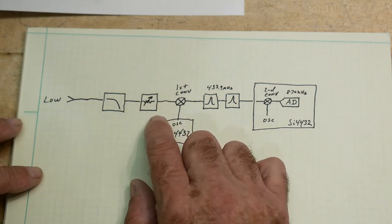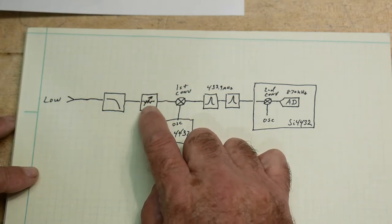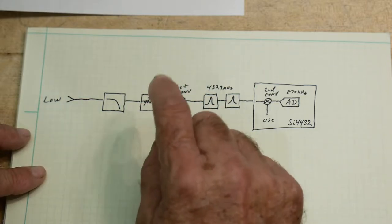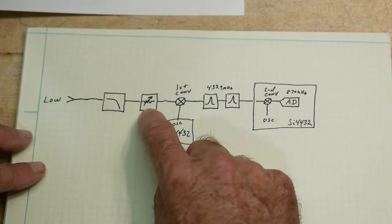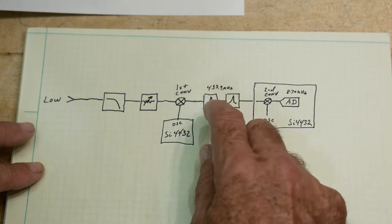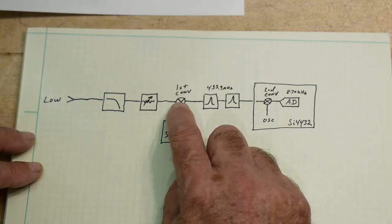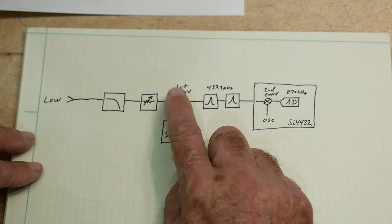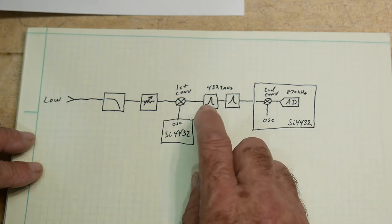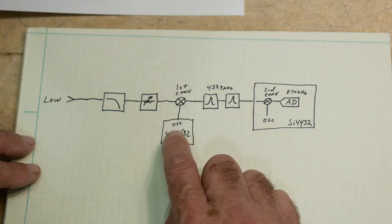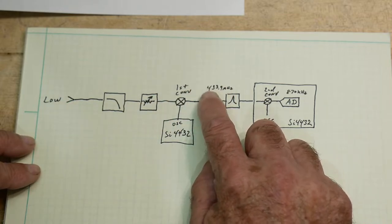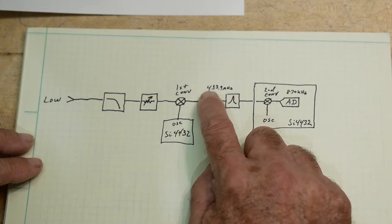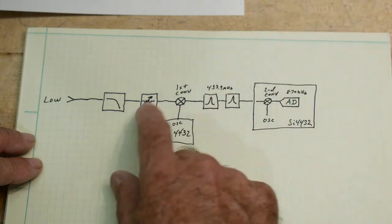So the next section is an attenuator, a step attenuator, and it's 0 to 31 dB. It's digitally implemented. And then it comes into a first converter. So this is an external mixer, and I believe it is a Mini-Circuits part, and it's run by a local oscillator. So the local oscillator mixes everything down to a 433.9 MHz first IF. So the first IF is 433.9 MHz, so it's above 350.